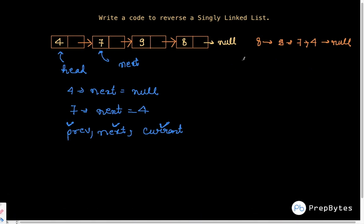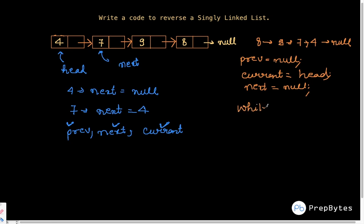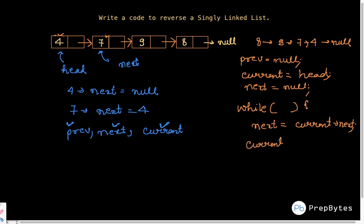So we initialize prev to null, current to head, and next to null as well. We'll run a loop because we have to change the next of all nodes — first for 4, then for 7, then for 9, then for 8. Inside the loop, we first store `next` equal to current's next. Then we set current's next equal to prev, reversing that link.